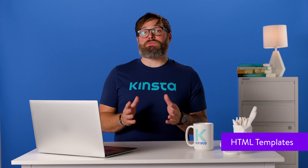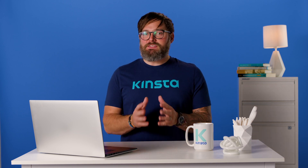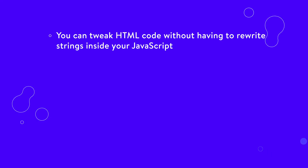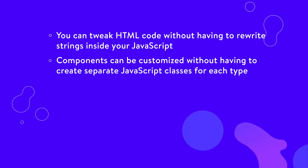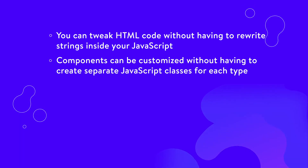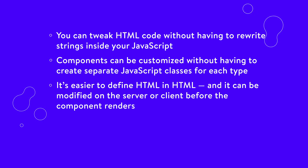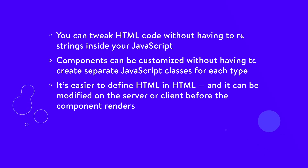A template allows you to define a chunk of HTML in your page that your web component can use. This has several benefits. First, you can tweak HTML code without having to rewrite strings inside your JavaScript. Second, components can be customized without having to create separate JavaScript classes for each type. Third, it's easier to define HTML in HTML, and it can be modified on the server or client before the component renders.